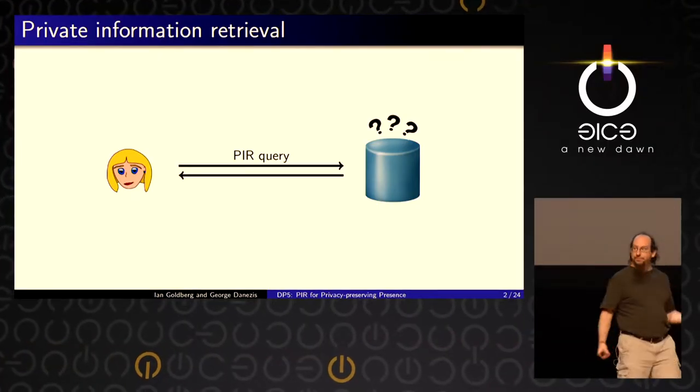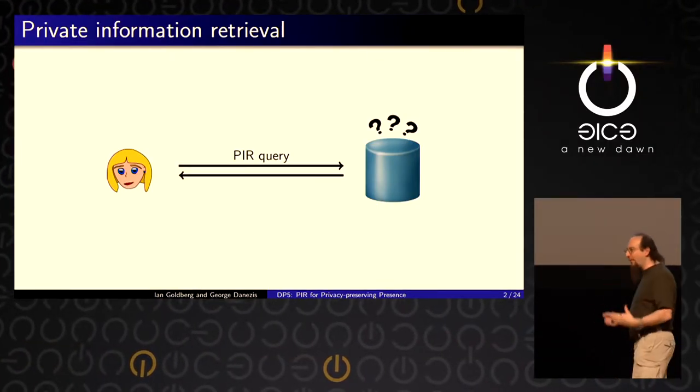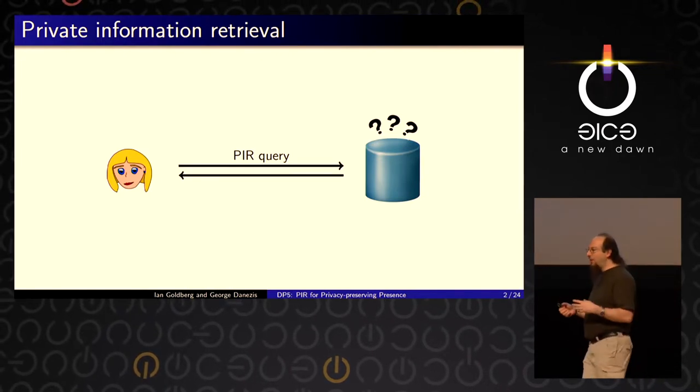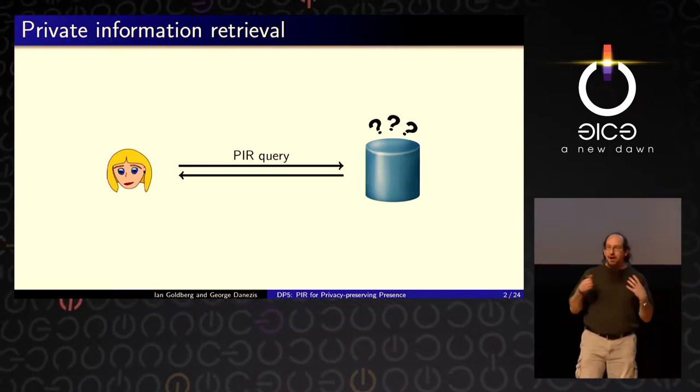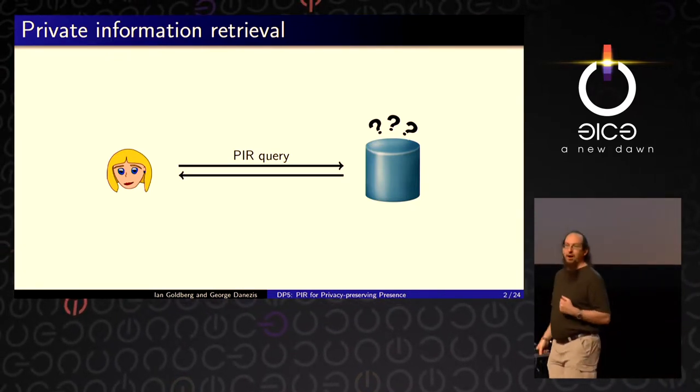Was der Server damit machen kann: er nimmt die verschlüsselte Anfrage, die mit Alice's öffentlichem Key verschlüsselt ist, verbindet sie mit der Datenbank, und schickt eine Antwort zurück, die immer noch verschlüsselt ist — und die mit Alice's privatem Key entschlüsselt werden kann. Das ist die generelle Struktur von Computational PIR. Diese sogenannten Homomorphie-Operationen sind rechnerisch etwas teuer, deswegen kostet es manchmal sehr viel, diese Berechnung zu machen.